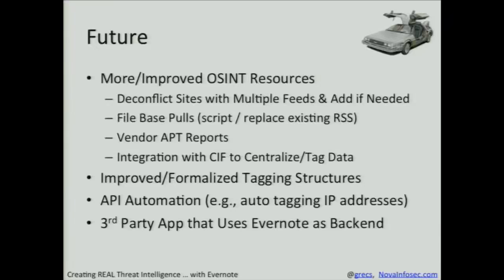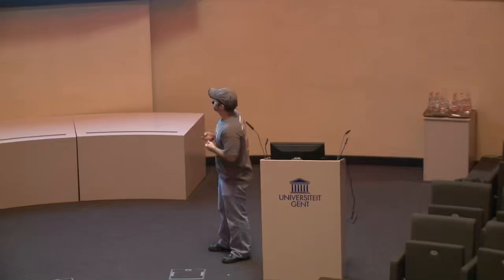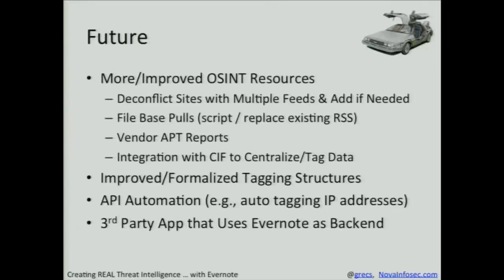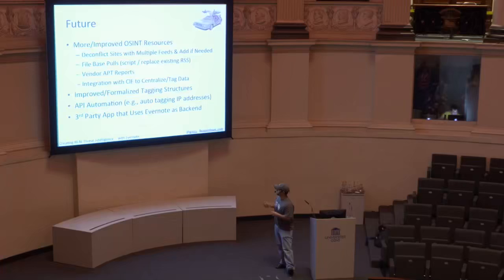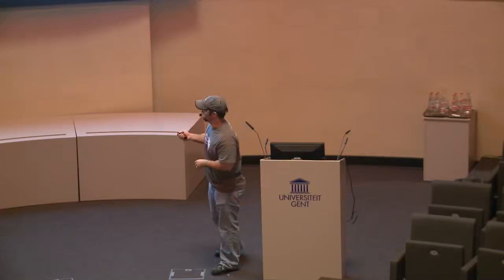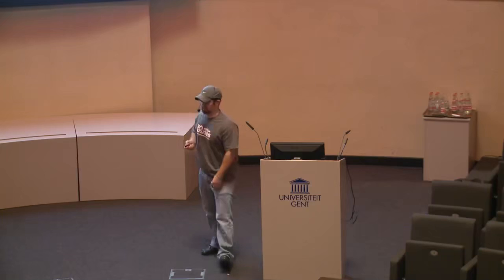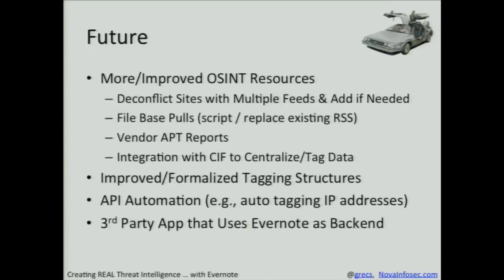Some future ideas are focused on doing more interesting things with OSINT through scripting and automation. For example, API automation where you create an app that goes into Evernote, looks for IPs, and auto-tags those. You could do cool stuff like that — there are a lot of third-party apps like a diary app that uses Evernote as its back-end database. You could come up with a third-party app that looks like an incident response tool but just uses Evernote as the back end.